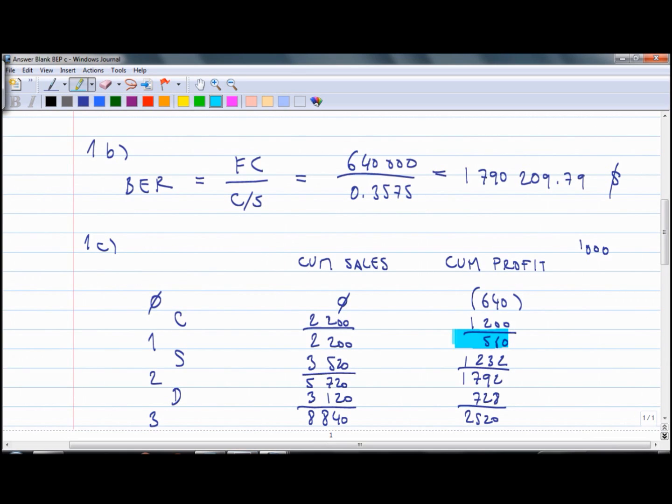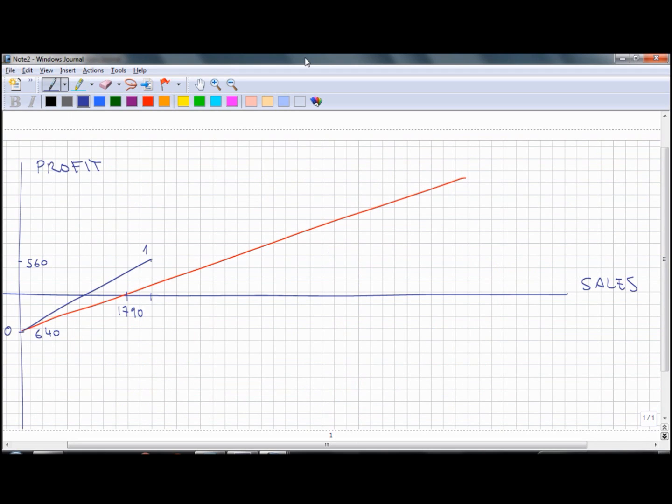We have done point number 1 and now we need to draw point number 2. Cumulative sales are 5,720, so this is going to be here. And cumulative profit is 1,792, and that gives me point 2. We connect the line now.